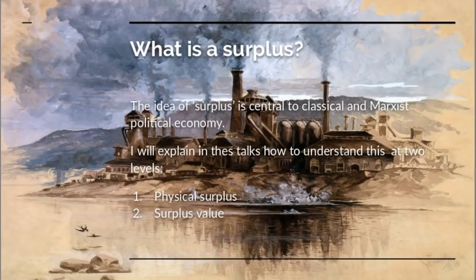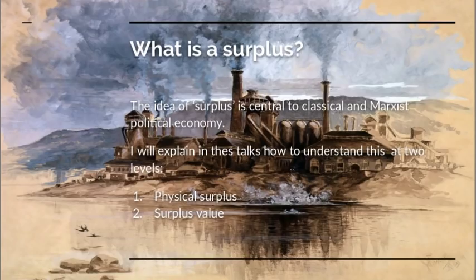Today I'm going to be talking about what the idea of surplus means in classical and Marxist political economy. You often hear people talking about the surplus product, surplus labour, surplus value, if you take any interest in political economy. I'm going to try and explain in this talk how this works at two levels: at the level of physical surplus and the level of surplus value.